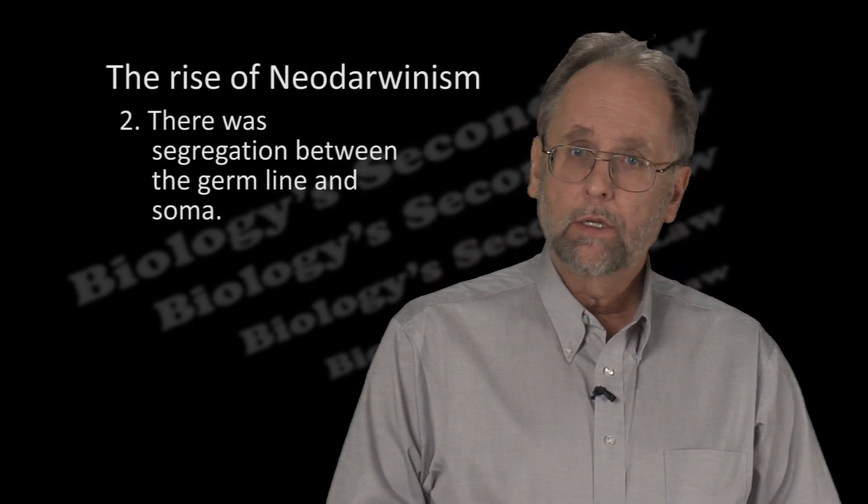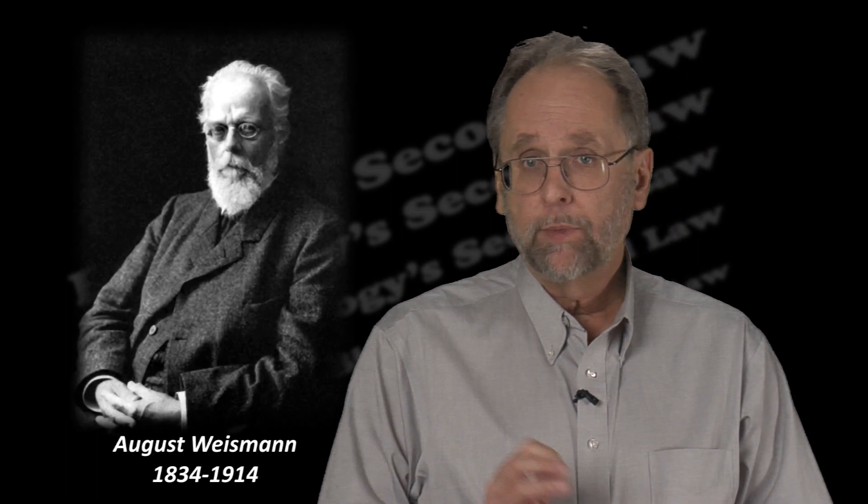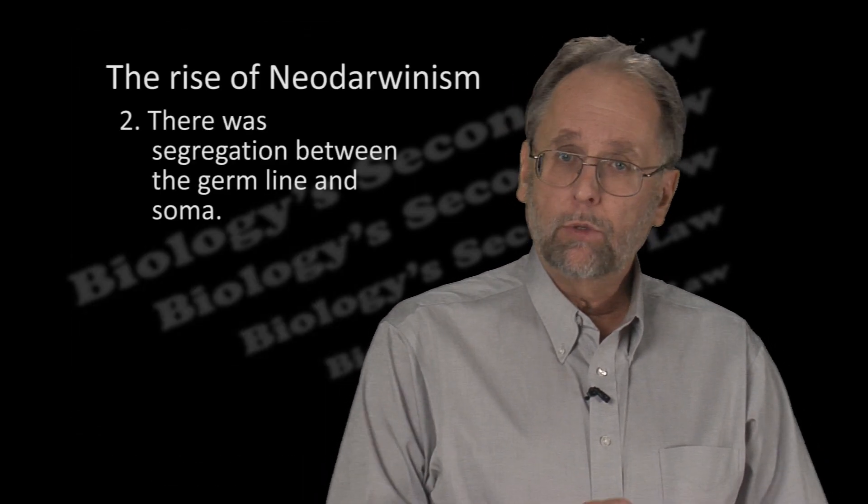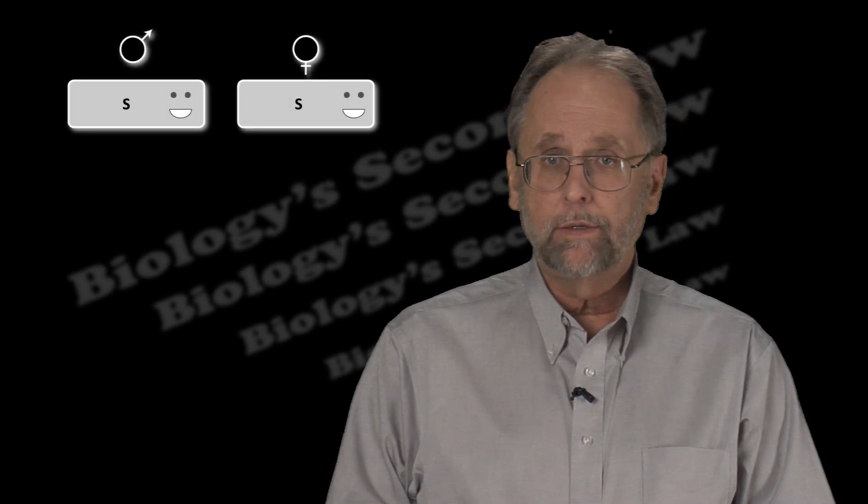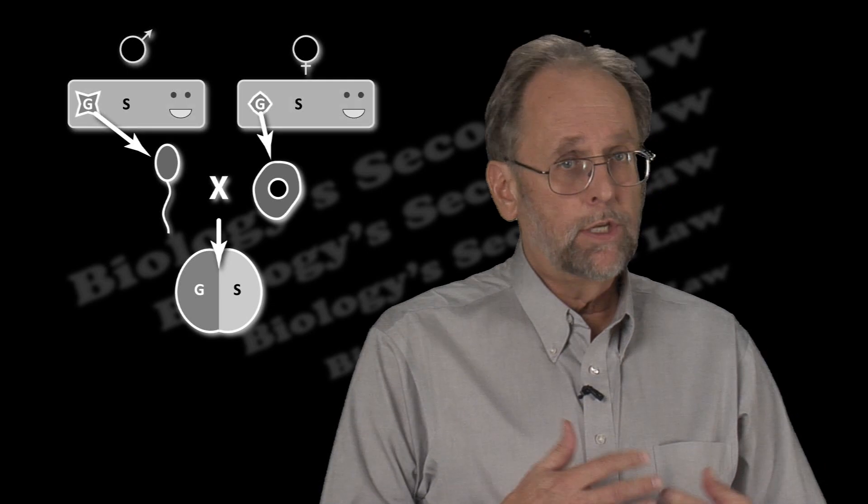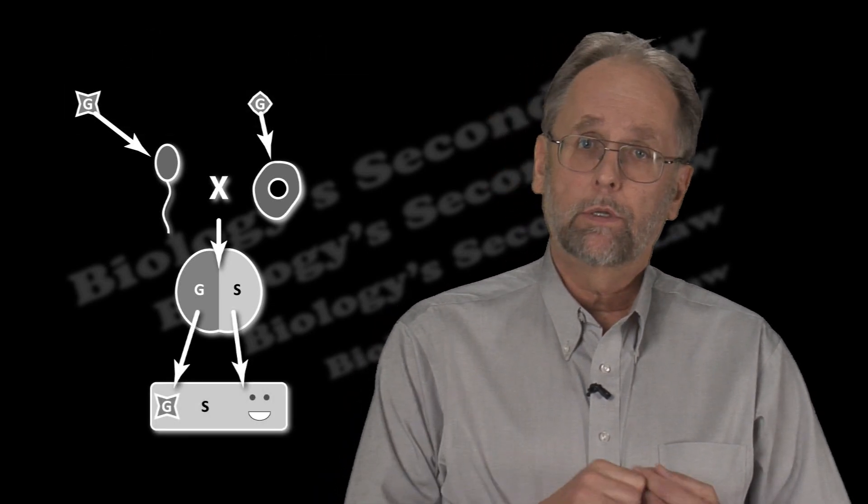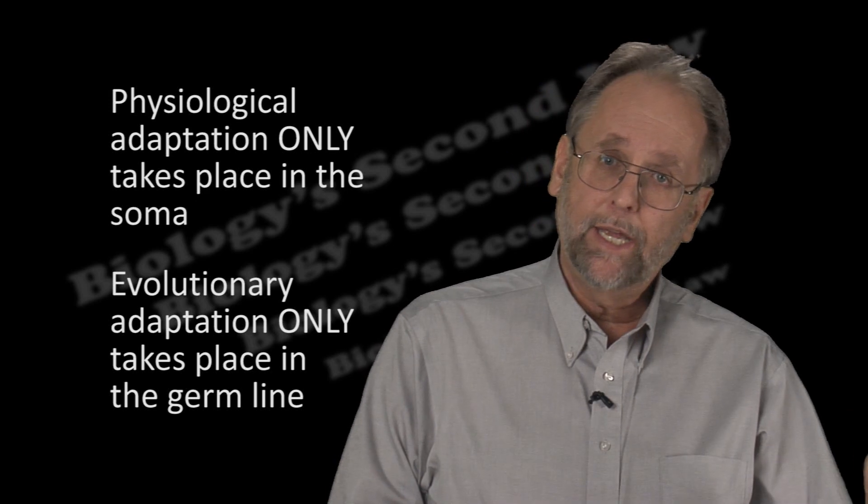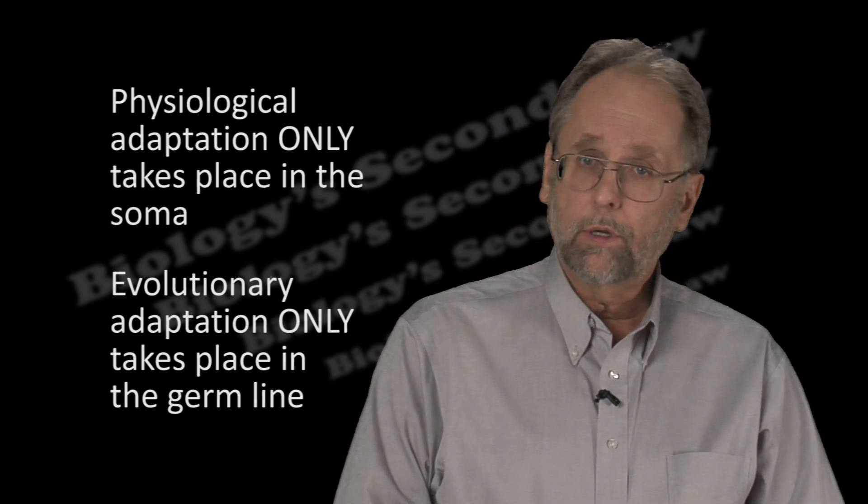The second was the embryological work of the German biologist August Weissmann, who proposed the so-called theory of germline segregation. What Weissmann meant by this was that heredity operated solely through a lineage of cells within the body tasked with reproduction. This he called the germline, which in sexually reproducing animals were the haploid sperm and eggs. The cells of the rest of the body, the soma, existed only to provide nutritional support to the germline. This doctrine erected an insurmountable barrier between physiological adaptation, which took place in the soma only, and evolutionary adaptation, which could only occur through the germline.